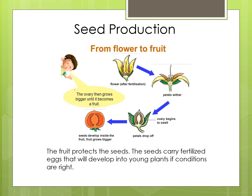Refer to your book page number 64. The last step is the fruit gets ripe. This is the diagram of development of a full tomato fruit with seeds. The fruit protects the seeds. The seeds carry the fertilized egg that will develop into a young plant if conditions are right.